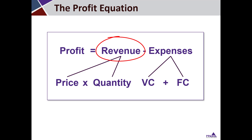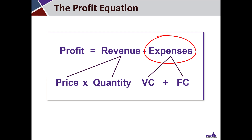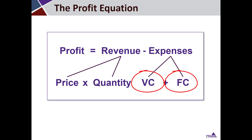If all you're doing is selling things, as opposed to making investment income or other income that you would also include in revenue, revenue is made up of price times the quantity that you sell. And expenses, as you can see in the formula, include the variable costs and the fixed costs that we just talked about. We're going to refer back to this equation as we go through our project valuation techniques — break-even analysis and net present value — in the next set of videos. Thanks a lot.